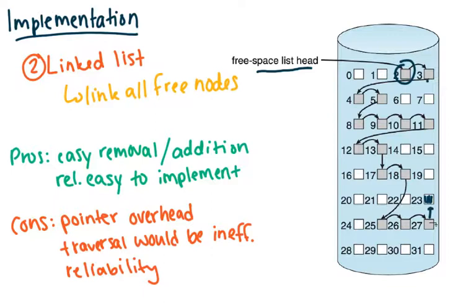Cons, again, we have this overhead of pointers. Traversing it would be inefficient, but there's really not very many times we're actually going to have to traverse the full free space list. It's going to be just these adding and removing from the front and back. Reliability. Anytime we're talking about pointers linking things together, if one of those pointers become corrupt, then we're going to run into issues.